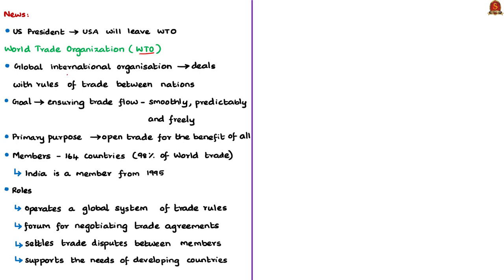The World Trade Organization or WTO is the only global international organization that deals with the rules of trade between nations. Its goal is to ensure that trade flows as smoothly, predictably and freely as possible, with the primary purpose of opening trade for the benefit of all. The WTO has 164 member countries representing 98% of world trade. India has been a member of the WTO from 1995. The WTO operates a global system of trade rules, acts as a forum for negotiating trade agreements, settles trade disputes between members, and supports the needs of developing countries.